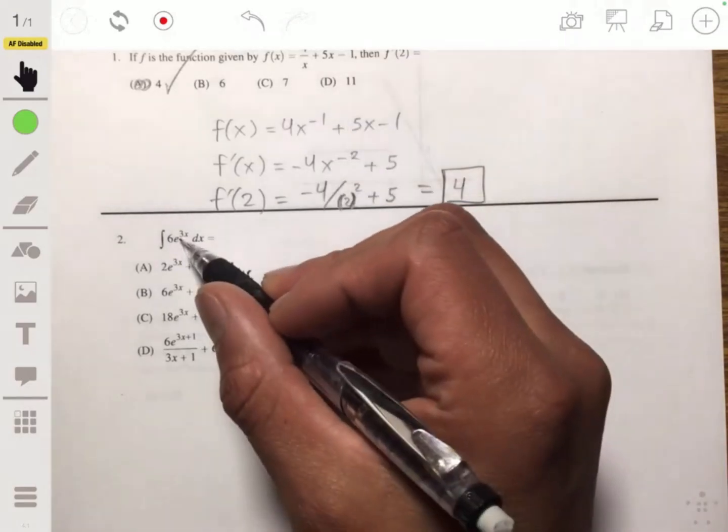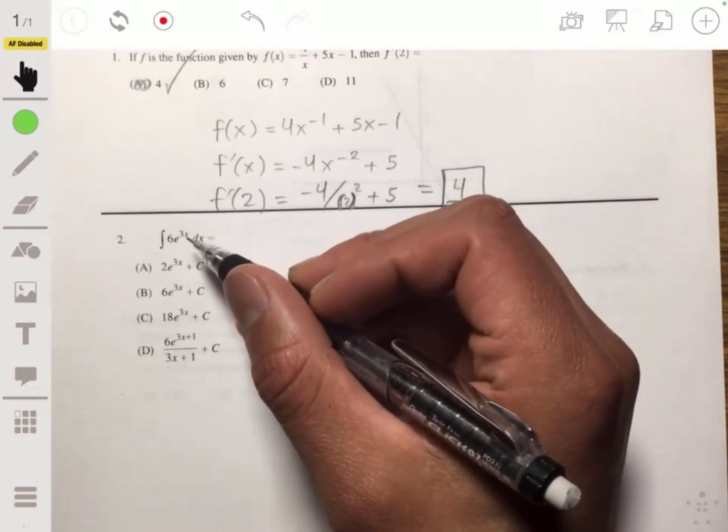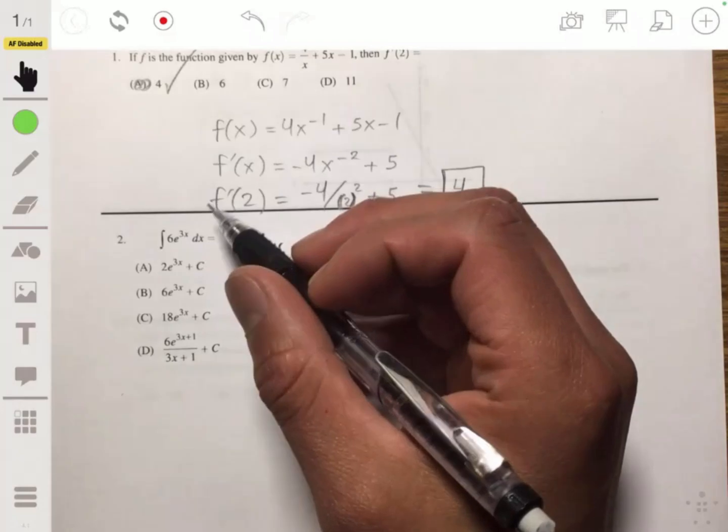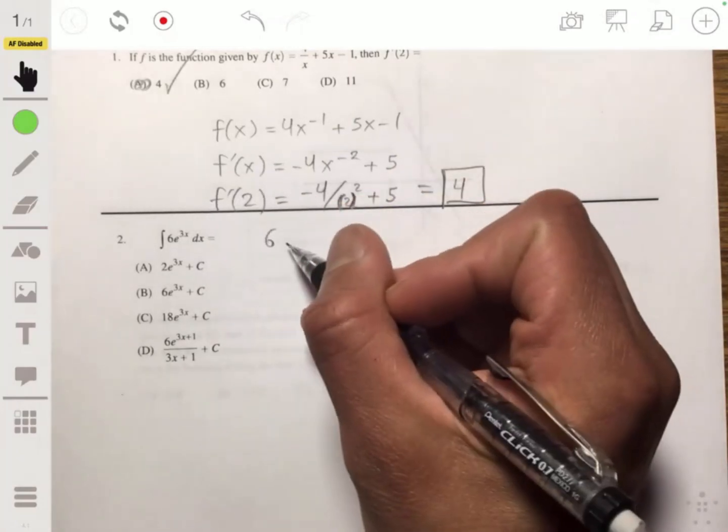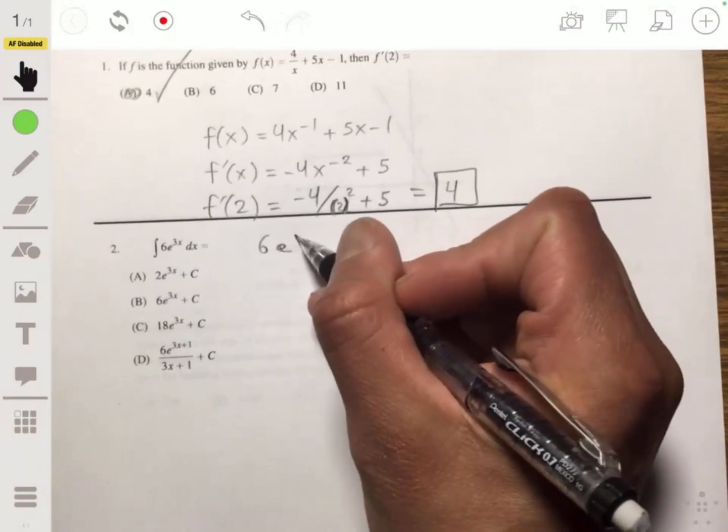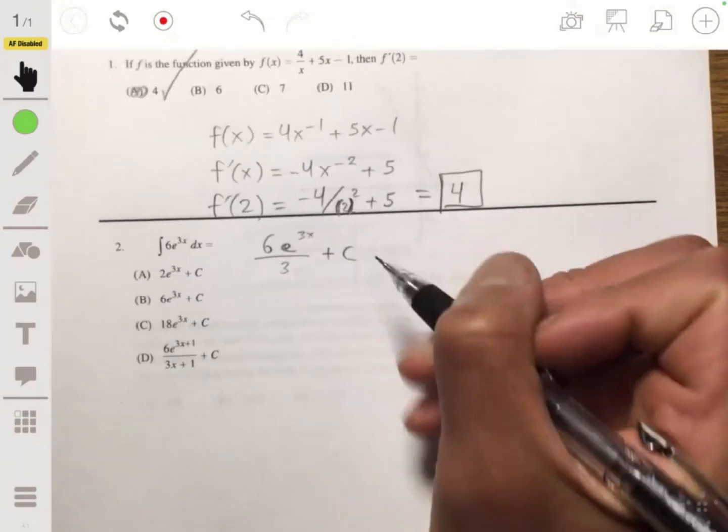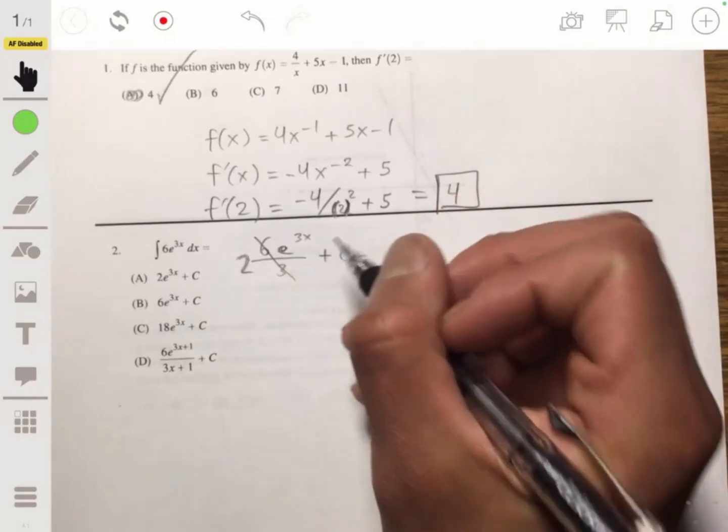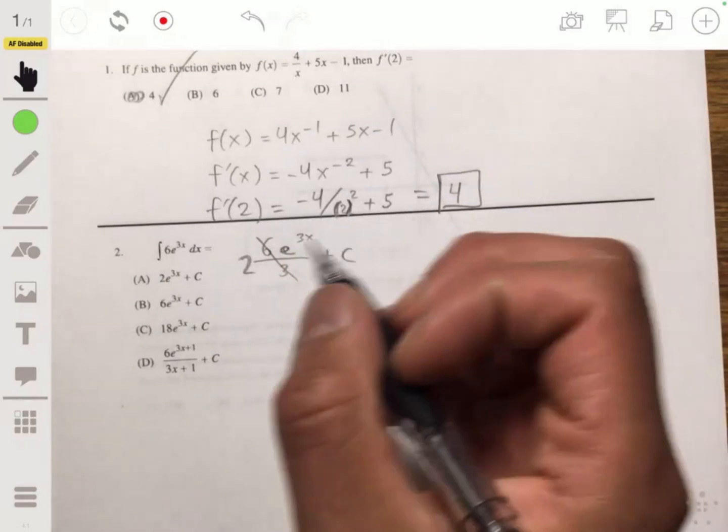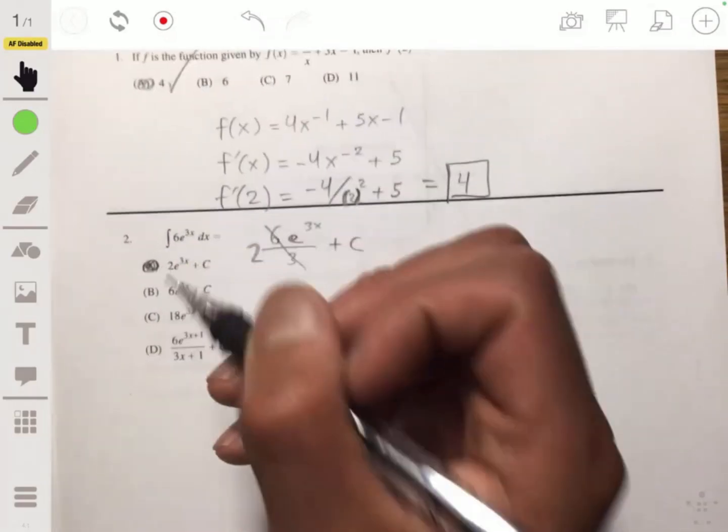So we just have to remember the derivative of e^(3x) is going to be e^(3x), except we have to use chain rule. So instead of multiplying by 3, we're going to divide by 3. So this will be 6 times e^(3x) over 3 plus our constant c. 6 over 3 becomes 2, and then our answer will then just be 2e^(3x), so A again.